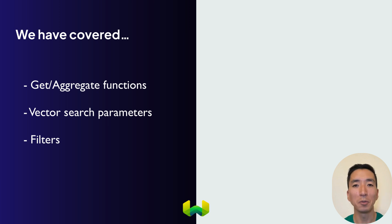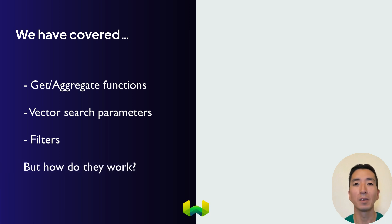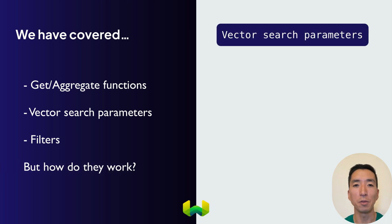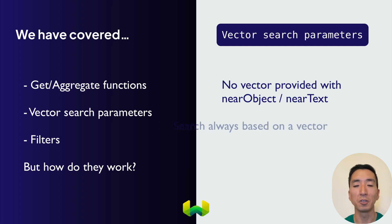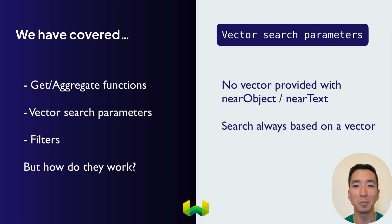Now let's take a moment to explore the vector search process in a little bit more detail. You might have noticed that even though all three of near vector, near object, and near text are vector search parameters, you don't actually provide a vector with near object or near text. But regardless of whether you use near vector, near object, or near text, the actual search is always based on a vector.